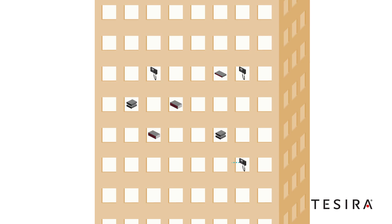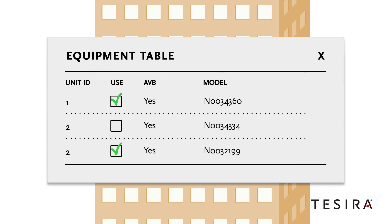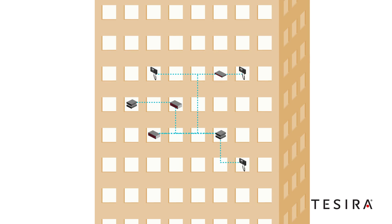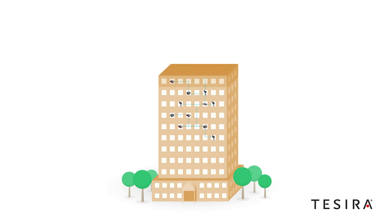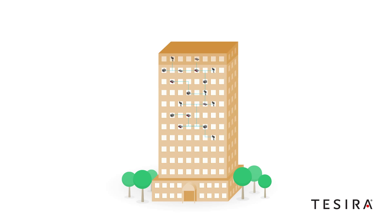After the hardware has been installed, the system design can be uploaded. Once the TASIRA endpoints are auto-discovered on the network, the system designer can choose which units to update via the equipment table. As system requirements change or expand, the compilation engine will help determine the additional requirements for the build-out.